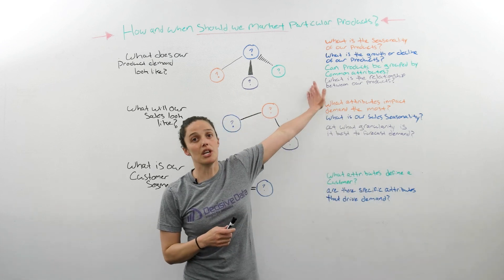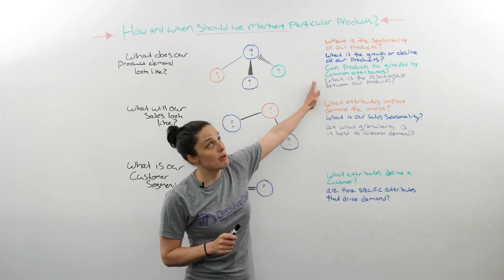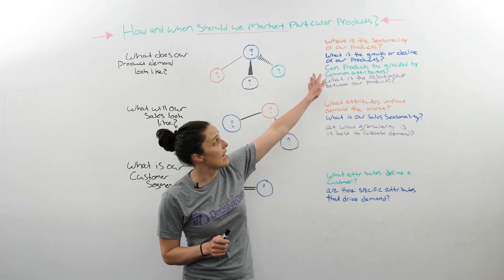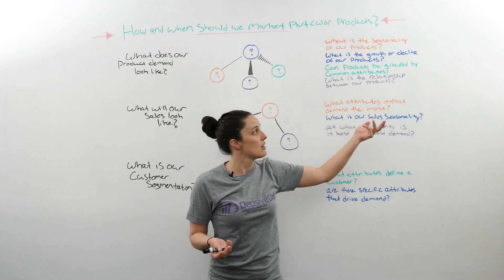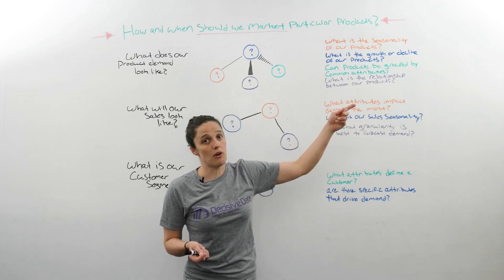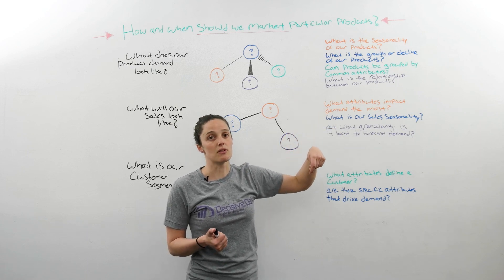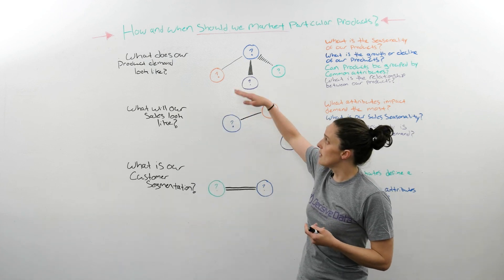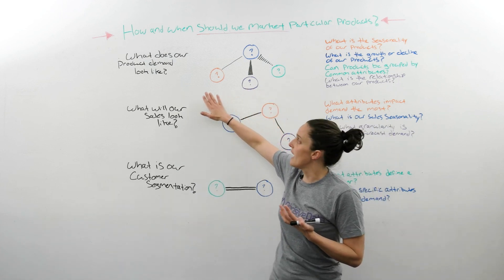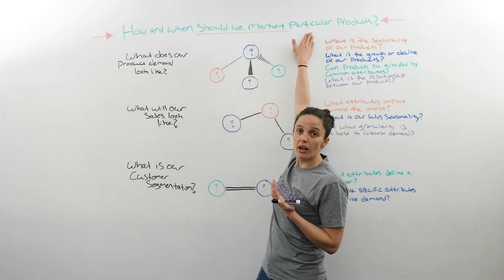So we have our elemental questions over here about what our product demand might look like. And those elemental questions are, what is the seasonality of our products? What is the growth or decline of our products? What is the relationship of our products? Can products be grouped by common attributes? All of these elemental questions build our product demand molecule that answers this question, which then tells us what particular products we should market to.